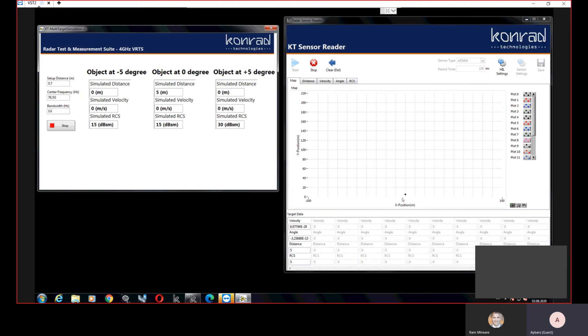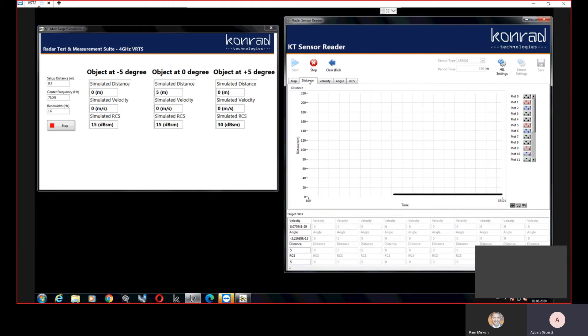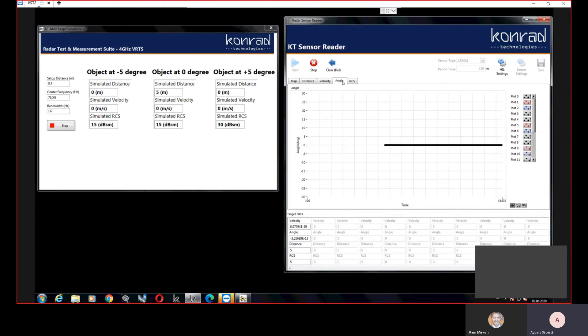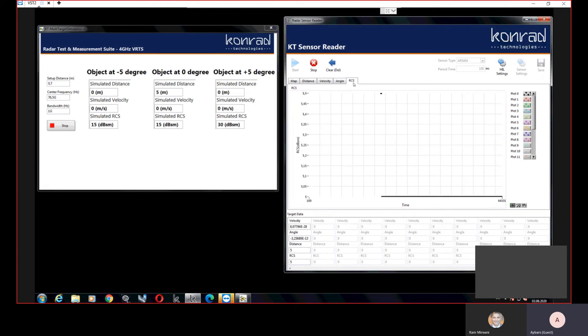With our sensor reader program we are able to plot detected object attributes individually such as distance, velocity, angle and radar cross-section.